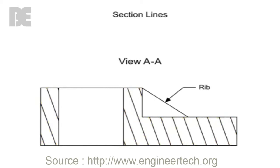Some exceptions to this rule are for parts that are thin or parts where the addition of section lines would be confusing, such as webs, ribs, and spokes. In this illustration, the rib has not been given section lines because it is thin with respect to the surrounding material.